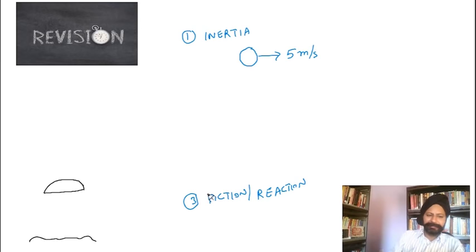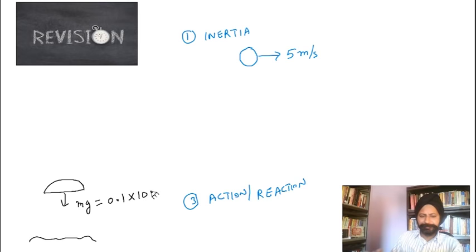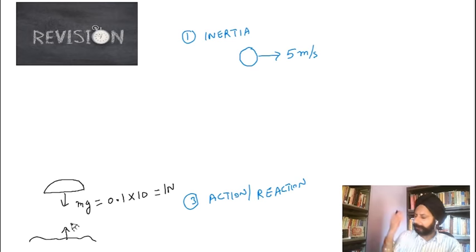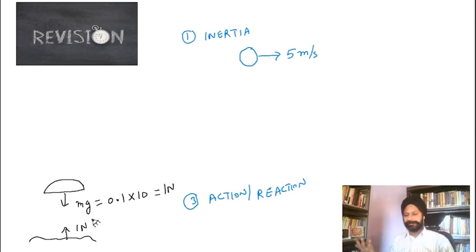Let's take a more meaningful example. This mouse is 100 grams. The earth is pulling it down with mg — that's 0.1 kilograms times 10 meters per second squared, which gives one newton. Newton says if the earth is pulling the mouse down by one newton, then the mouse is pulling the earth up by one newton. So why doesn't the earth move? Because one newton is far too small to move something as massive as the earth.